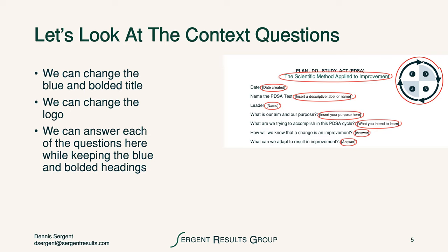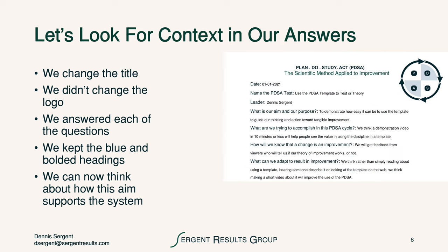Let's look at the context questions. We can change the blue and bolded title to fit our specific theory we're going to test. We can also change the logo, and we can begin to answer the context questions while keeping the blue and bold headings. We look for context in our answers. In this example, we changed the title — we did not change the logo, but you could certainly do that. We answered each of the questions and kept the blue and bold headings. We can now think about how this aim supports the system.